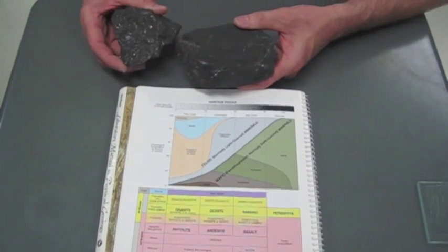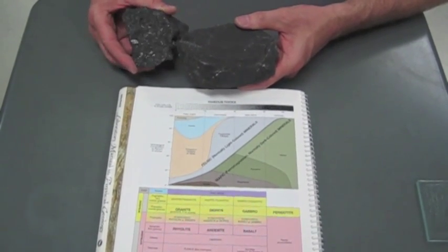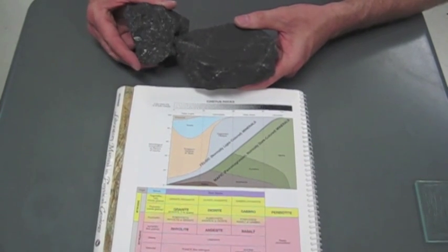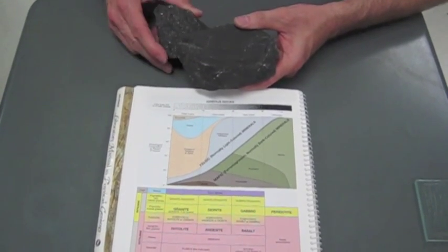You might confuse it with gabbro, another igneous rock, but the gabbro cooled slowly and it has lots of crystal faces and larger crystals in it.